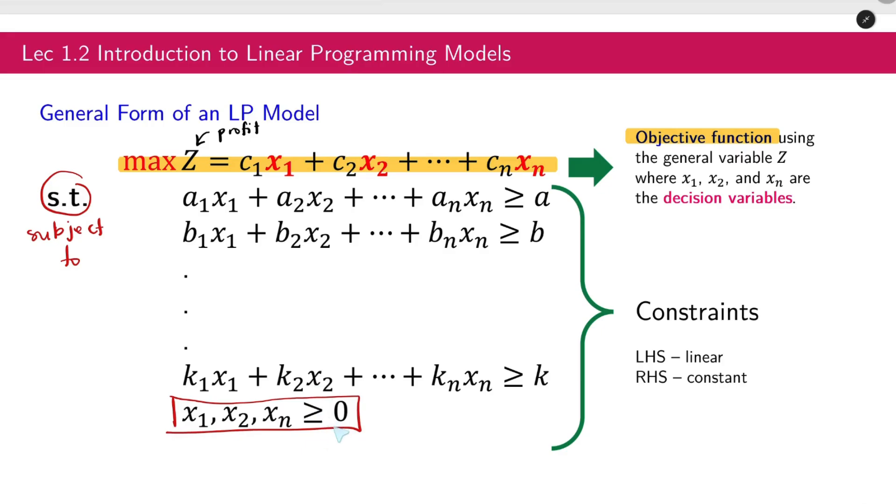And then this one is the non-negativity constraint. Always remember that you are required to write this. Otherwise, the LP model will be incorrect. If you do not write this, your LP model will not be restricted to positive values only. Meaning to say, you will consider negative values which is incorrect. Take note that the left-hand side of the constraint are linear.